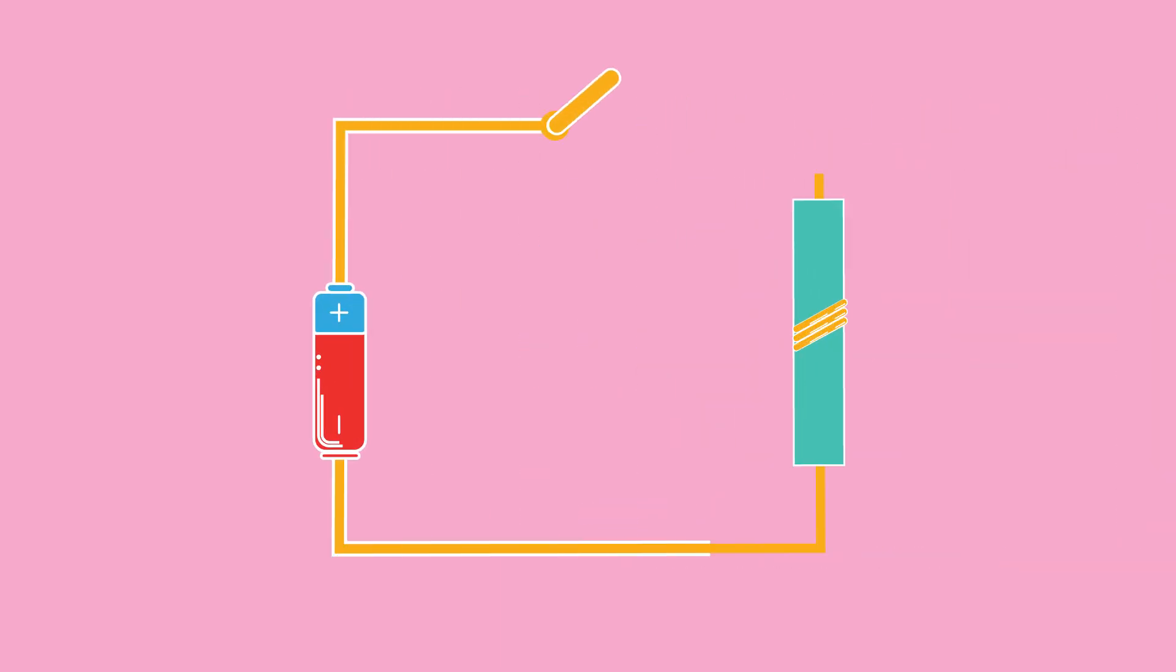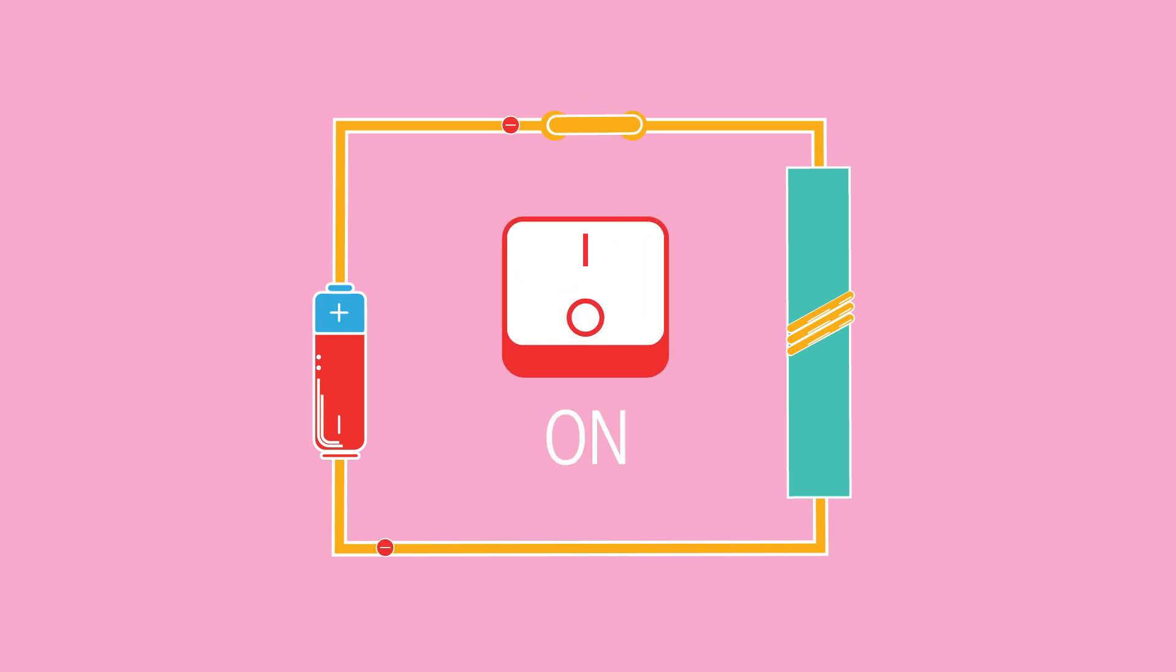So there you have it. Electromagnets are extremely useful and we can switch them on and off as well as control their strength.